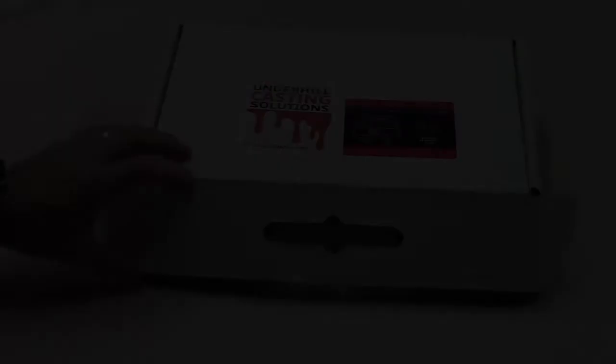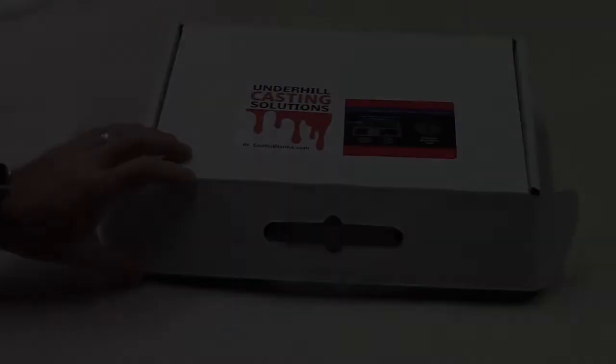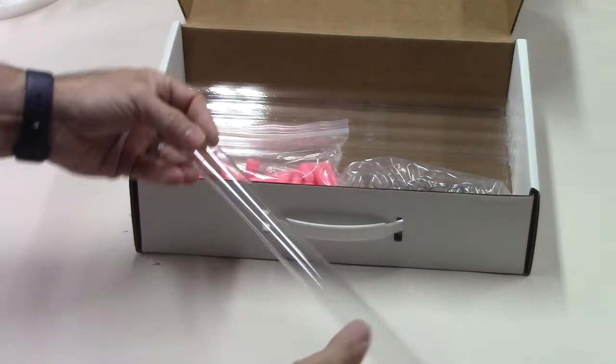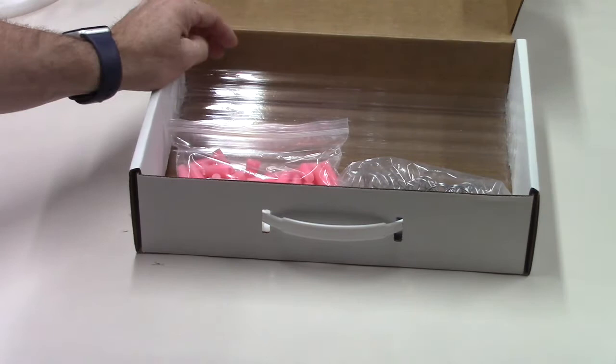Alright, let's look at the box. Inside the box, first thing you're going to notice, you're going to receive clear casting tubes. These tubes are a 7 eighths hole, which means you're going to be able to cast every pen tube size, from the smallest to the largest that they make, without changing your setup. You can either take these tubes and cut them in half, to get color casts, like this.